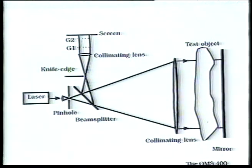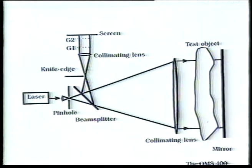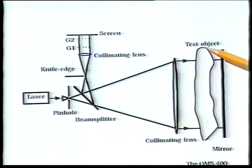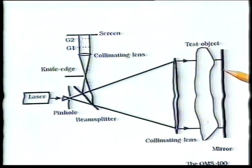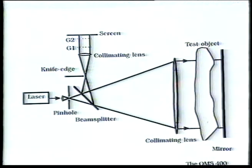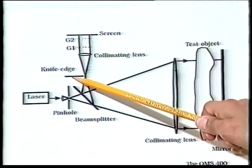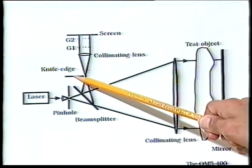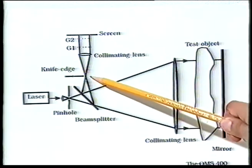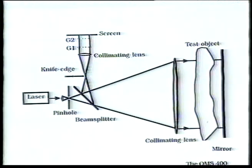Besides Moiré deflectometry, the OMS 400 has two additional modes of operation. FISO option: with the addition of a reference plate parallel to a flat mirror, the instrument can work exactly as a modified FISO interferometer. Schlieren option: a knife-edge spatial filter at the focal plane of the recollimated beam allows the instrument to work as a Schlieren device.